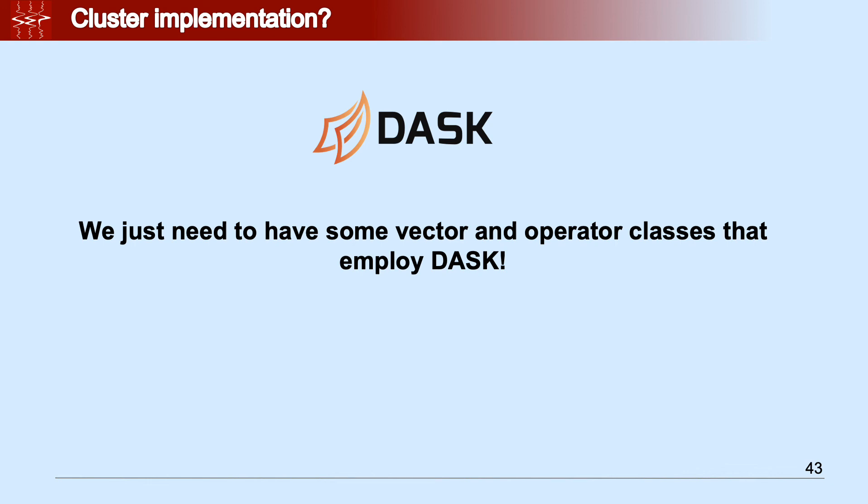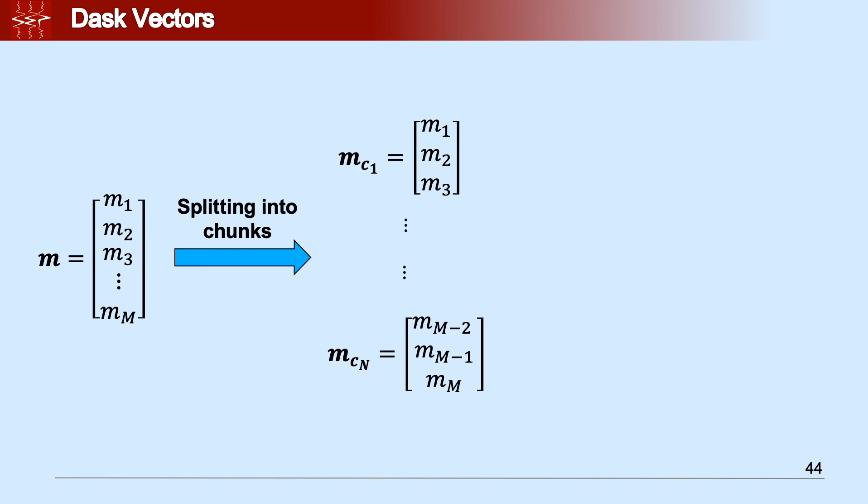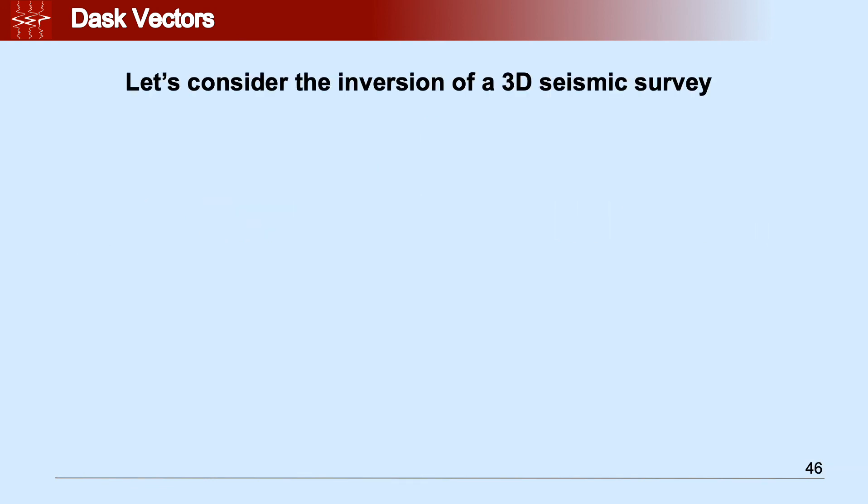We actually changed the vector and operator classes to employ Dask. Dask is a pretty powerful Python library that takes Python codes that run on your local machine and scales it up so that you can run it on a cluster. Let me describe to you how the Dask vector class works. Basically we can take a given vector, split it into chunks, and then spread those chunks onto different workers or different machines.